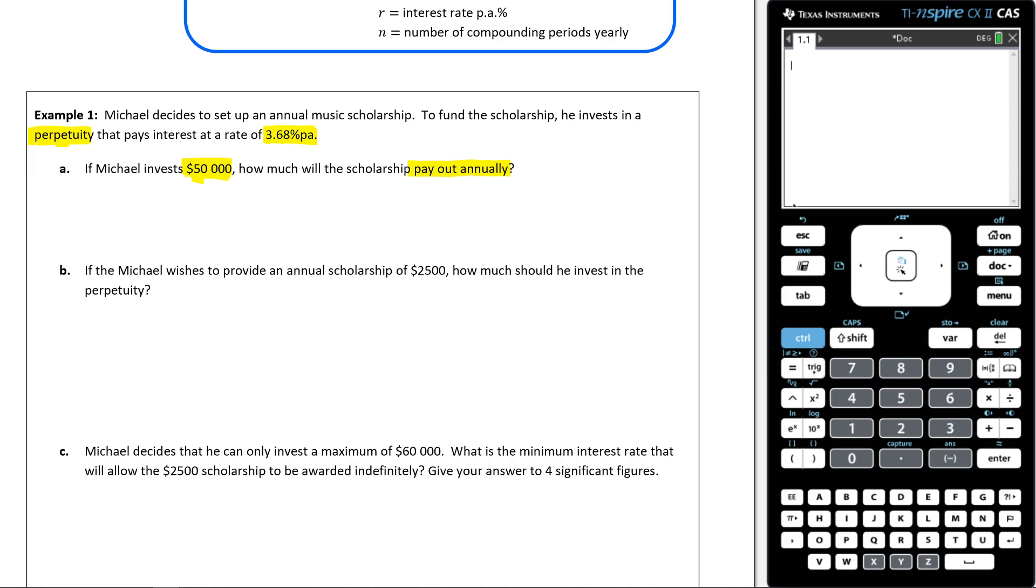So how much will it pay out annually? Well, this is where we have to understand what exactly a perpetuity is doing. A perpetuity pays out the interest generated on that money. So all we have to do is figure out what is 3.6% of $50,000. We also need to take into account the fact that this is paying out annually, so that's why we don't have to actually change that 3.6% per annum.